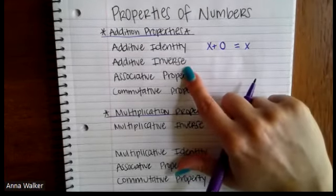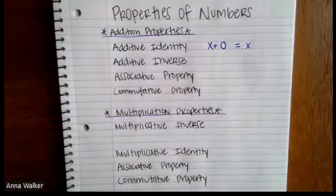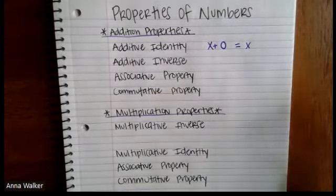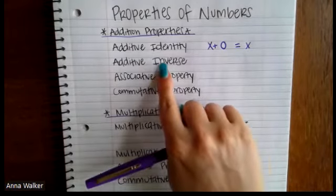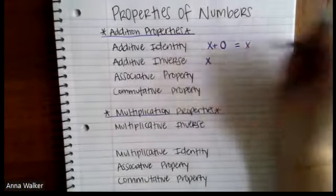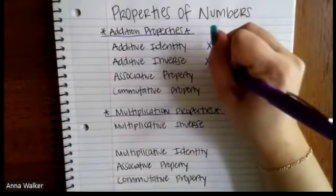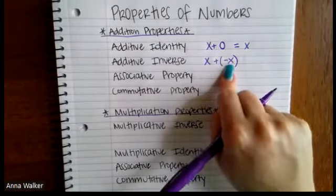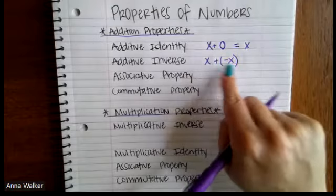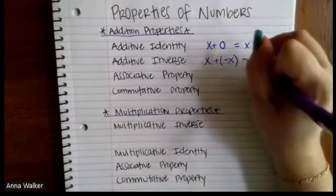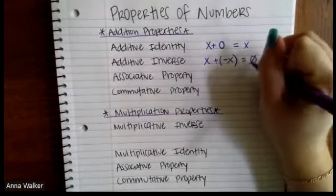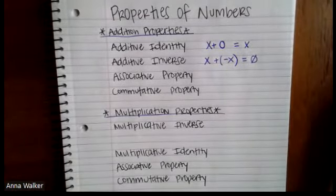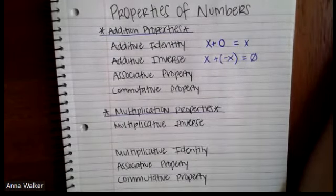The next thing we're going to talk about is the additive inverse, and this goes back to our conversation about a zero pair. This is saying that when we add opposites together, their value is going to be zero. Inverse is another word for opposite. So let's say I have the number X again — if I add the opposite or the inverse, the negative version of X, so like if this was three, the inverse or opposite would be negative three — when I add these inverses or opposites together, I get a value of zero. That's the property of additive inverse.